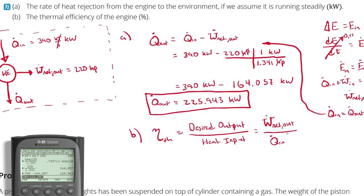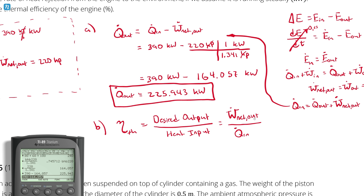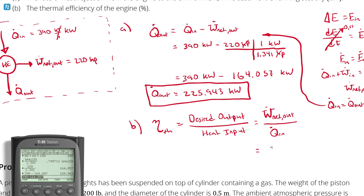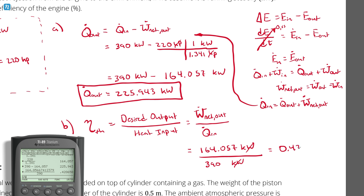But I could have just as easily written this as W over Q without the dots. The capital letter dot form is going to be most convenient here because I know my net power output and I know my rate of heat input. So this would be 220 horsepower, which I have already converted into kilowatts. So that's 164.057 kilowatts, divided by Q in, which is 390 kilowatts. My kilowatts cancel. And I'll get my thermal efficiency. So this would be 164 divided by 390. That's 0.4207.